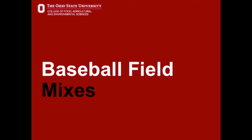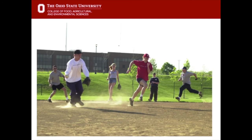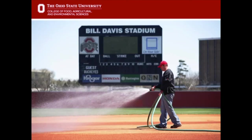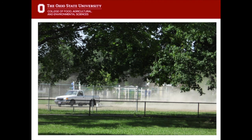Baseball infield mixes are a completely different animal. The root zones on infields are completely different to those on athletic fields like soccer and football. Baseball infield mixes have much higher proportions of silt and clay because we're trying to establish a firm surface for athletes to run on — they do not want to be running on unstable sand. Moisture management is extremely important; moisture is used to pack the surface down and keep it firm, so between innings it's not uncommon to see groundskeepers wetting the infield during games. When it gets dry it becomes very dusty, and if dragged too much when dry, the high silt and clay content can create large clouds of dust.